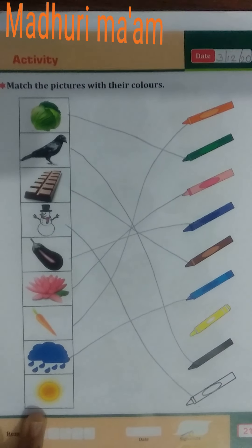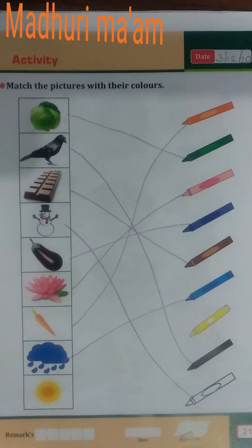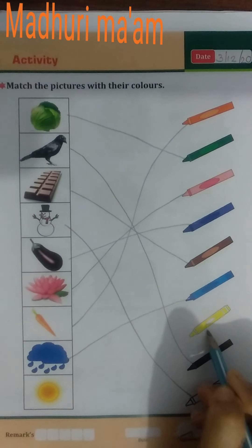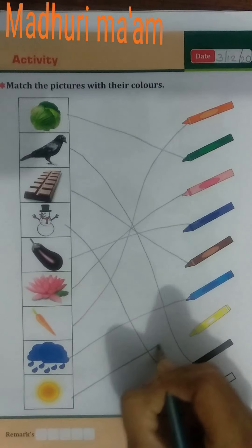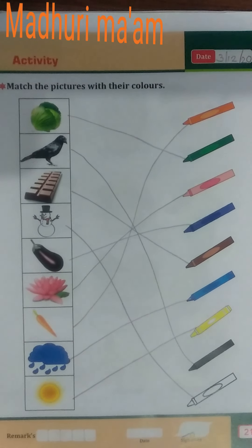Next picture is sun. What is the color of sun? Yellow color. So where is yellow color? Here. Match the sun with the yellow crayon.